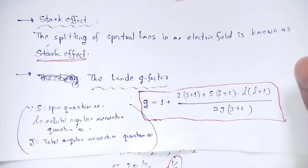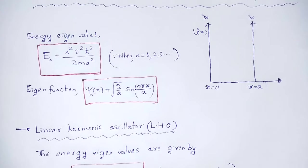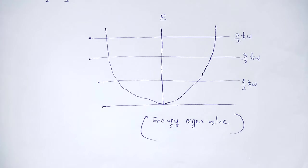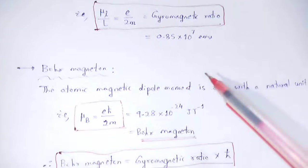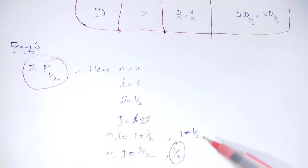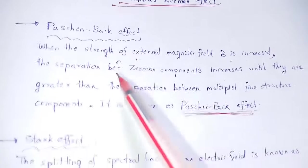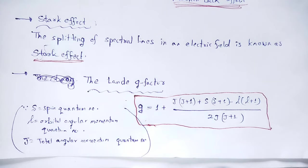Quantum mechanics and its applications — important topics covered: one-dimensional box, infinity potential well, linear harmonic oscillator, quantum dot, gyromagnetic ratio, Bohr magneton, Larmor frequency, space quantization, Stern-Gerlach experiment, spectroscopic notation, Lorentz unit, Zeeman effect, Paschen-Back effect, Stark effect, and Landé g-factor. With this useful and informative session, let me wind up. Thank you.